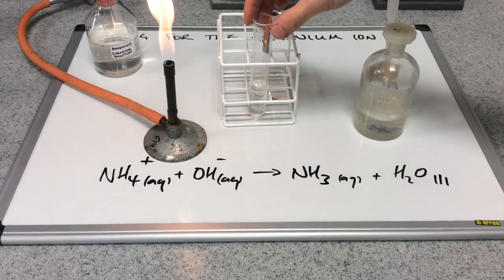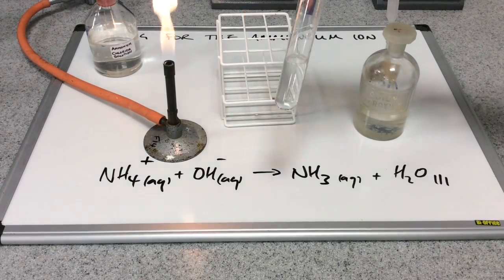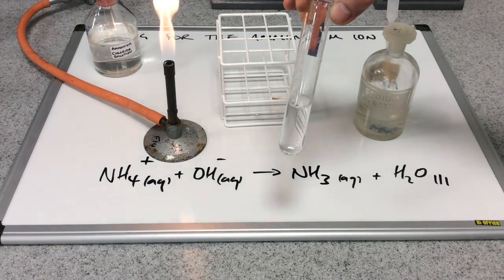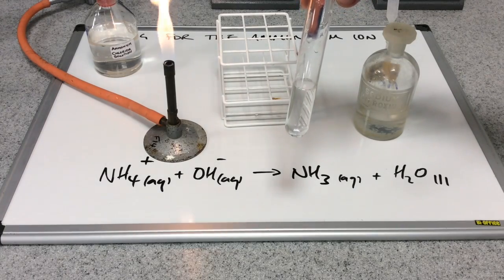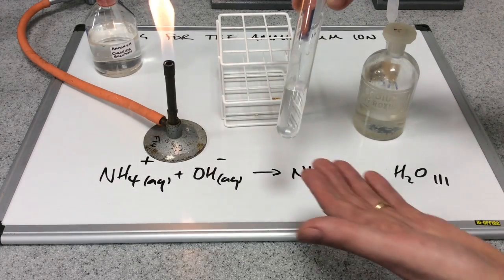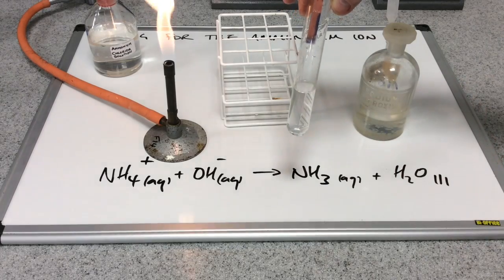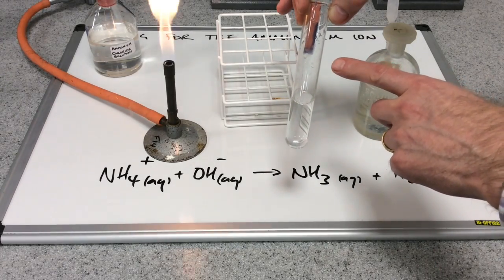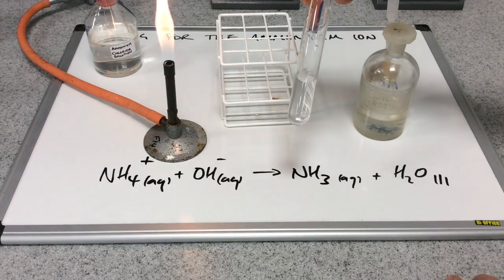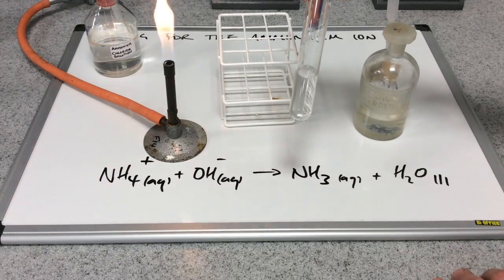I've finished heating now. I'll just show you the litmus paper so you can see it's going blue, and that's confirmation that ammonia was being produced by heating this solution. Ammonia is an alkaline gas and it turns red litmus paper or universal indicator paper blue.